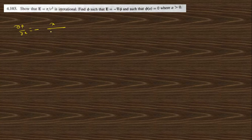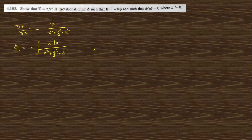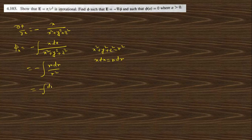So ∂φ/∂x = x / (x² + y² + z²). Integrating, φ_x = −∫ x dx / (x² + y² + z²). Taking r² = x² + y² + z², we have x dx = r dr. So this becomes −∫ r dr / r² = −∫ dr/r = −ln r + constant, which gives φ_x = ln(c/r).